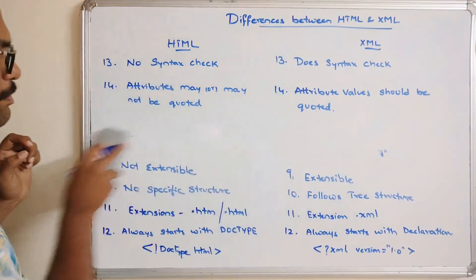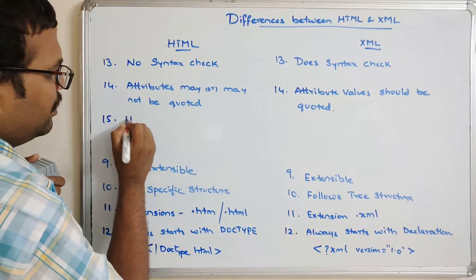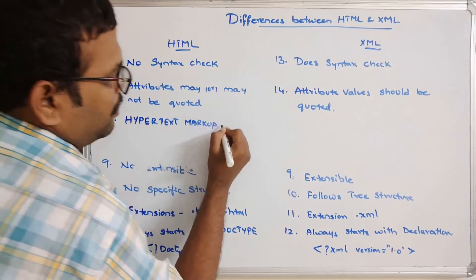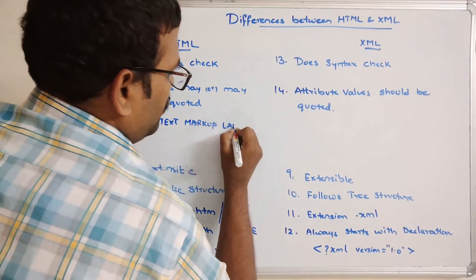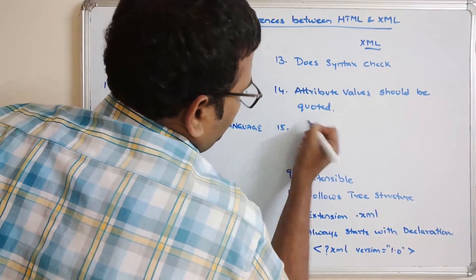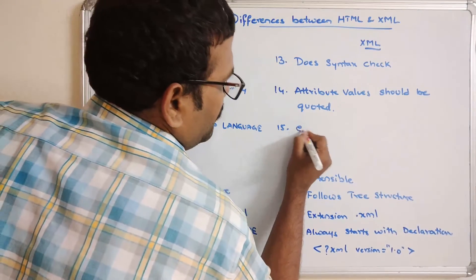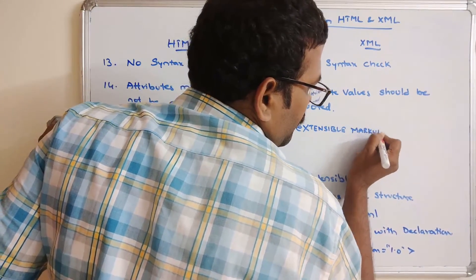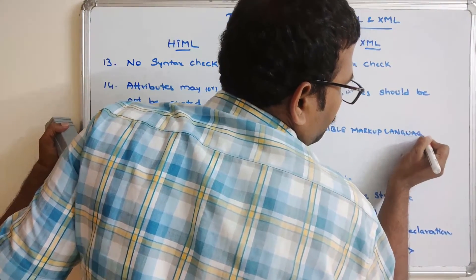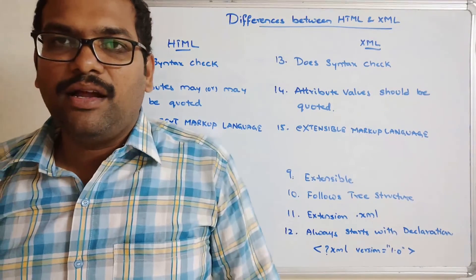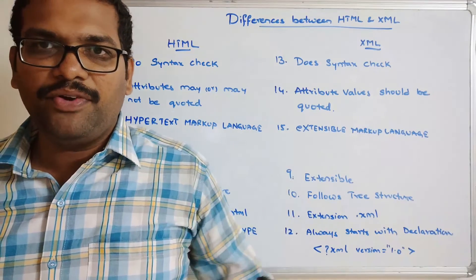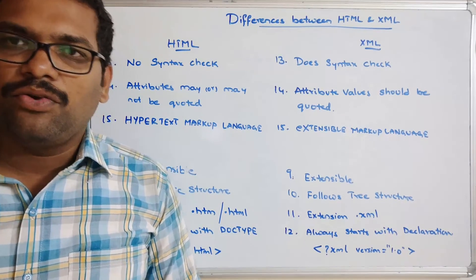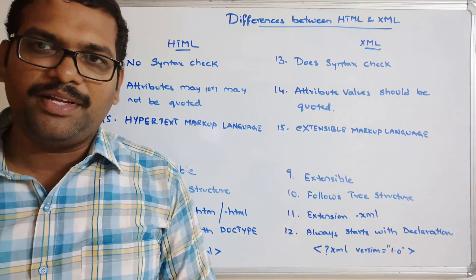To finish, the abbreviation: HTML stands for HyperText Markup Language, and XML stands for Extensible Markup Language. These are all the differences. Hope you enjoyed the session — feel free to post any doubts in the comment section, like and share the video, and don't forget to subscribe. Thanks for watching!